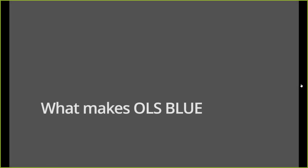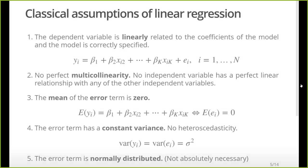We're going to analyze those assumptions. The first thing we want to know is what makes OLS — ordinary least squares — BLUE, a Best Linear Unbiased Estimator. Here are the classical assumptions. Number one: the dependent variables are linearly related to the coefficients of the model. In other words, we can come up with a linear combination of the independent variables that correctly describes the relationship they have with the dependent variable.